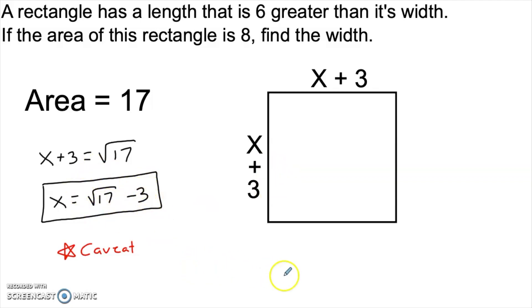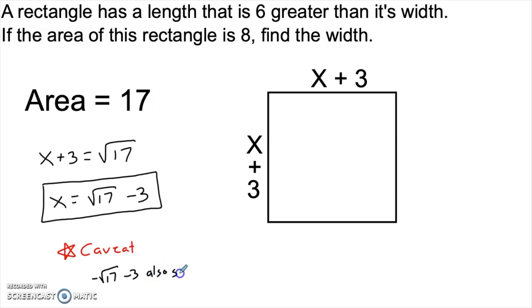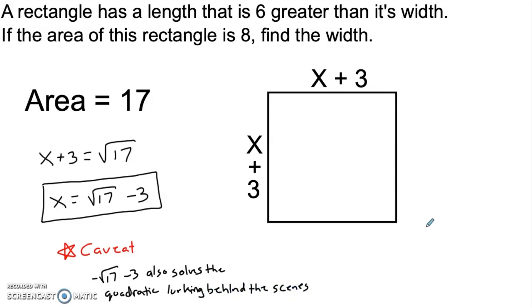Mathematically, the quadratic equation that's sort of behind the scenes here does have a second root. Negative the square root of 17 minus 3 also solves the quadratic that is lurking behind the scenes of this geometric representation. But the geometric problem itself has only one solution — the positive solution, which is rad 17 minus 3.